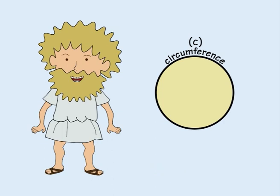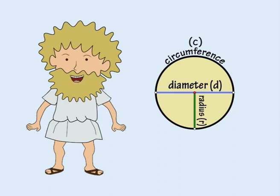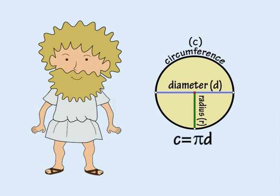Where c is the circumference of a circle, d the diameter and r the radius, then we can say c equals pi times d or since d is 2 times r, 2 pi r.